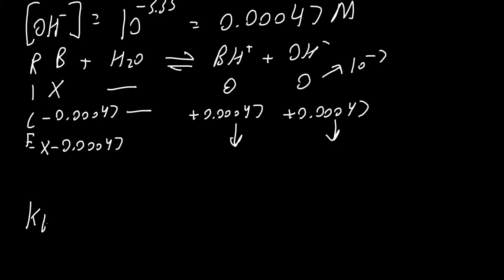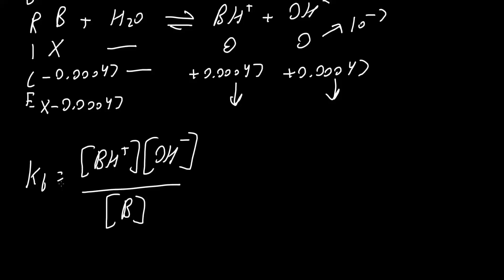And so Kb is equal to BH plus times OH minus, our product, divided by B. This will equal, in our given problem statement, we know that Kb is equal to 9.35 times 10 raised to negative 7. And we want to solve for B, this value right here in order to produce the desired pH.